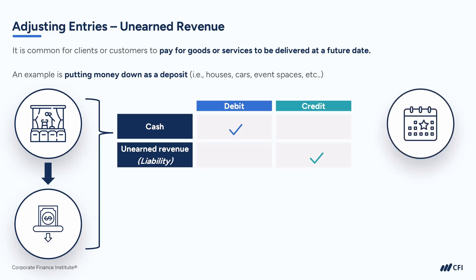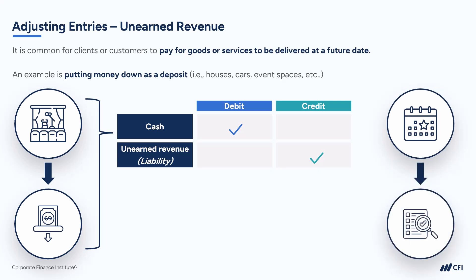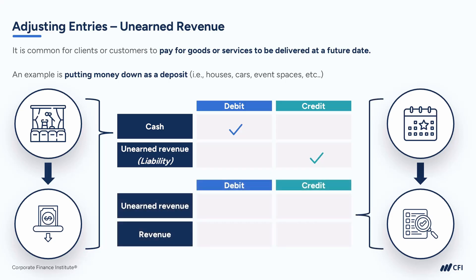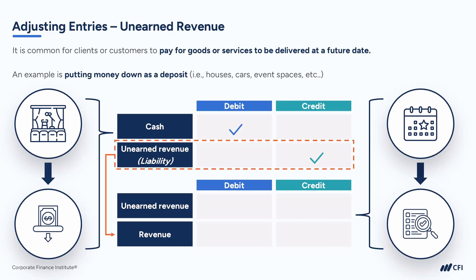At the end of the period, let's say it's a year, the business needs to evaluate the value of their unearned revenue to determine if the obligation still exists or if they've delivered the service or good, and then can record that unearned revenue as actual revenue on the income statement. For instance, if a deposit was made for a conference center to hold the space for a planned event, once the event takes place, the company reduces the unearned revenue liability and records the amount received as revenue.